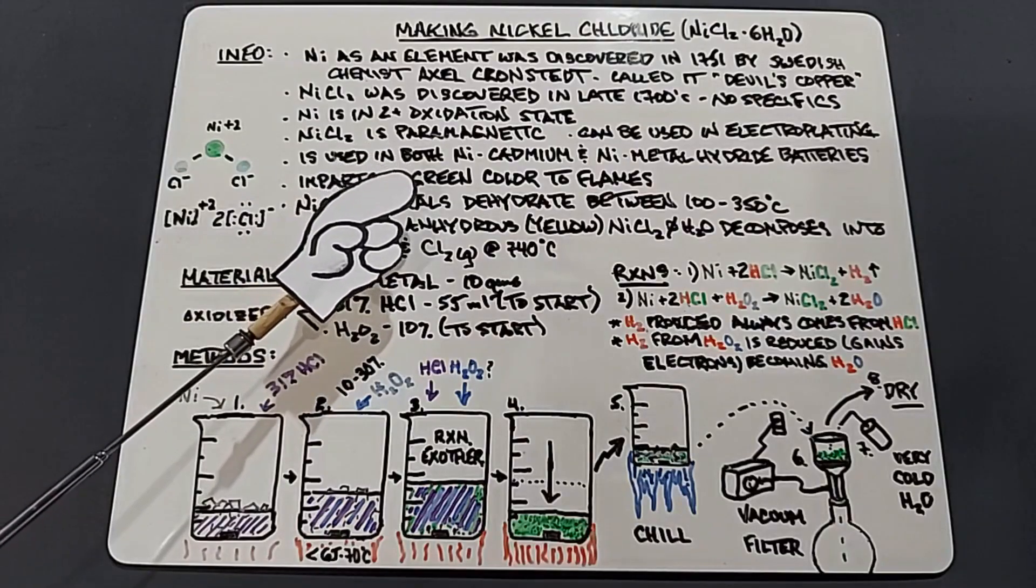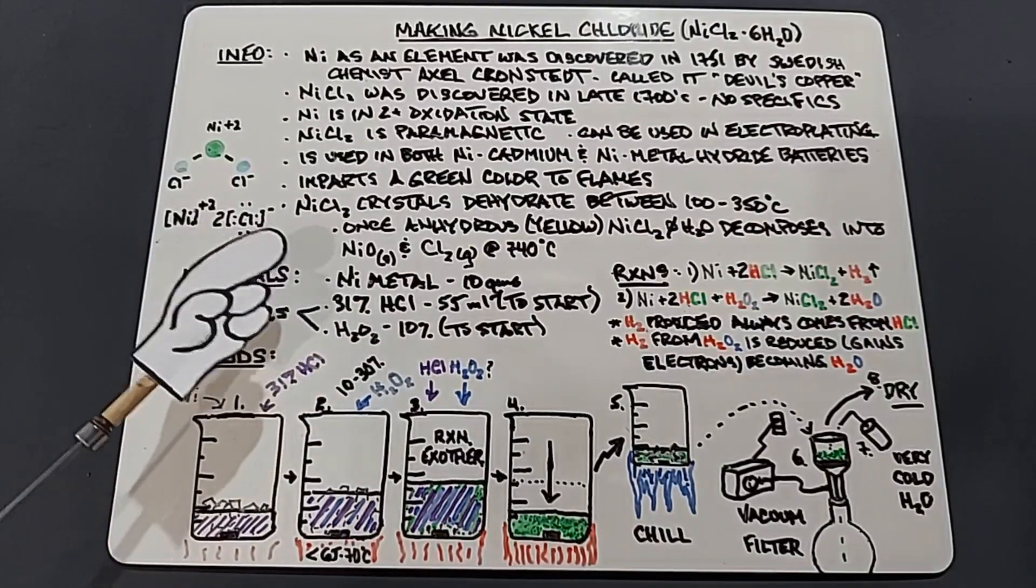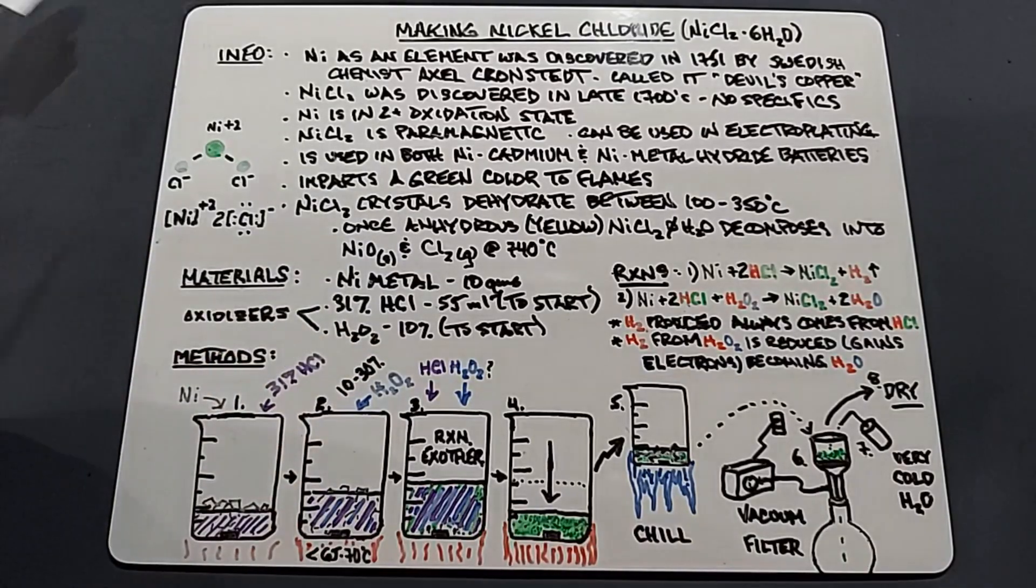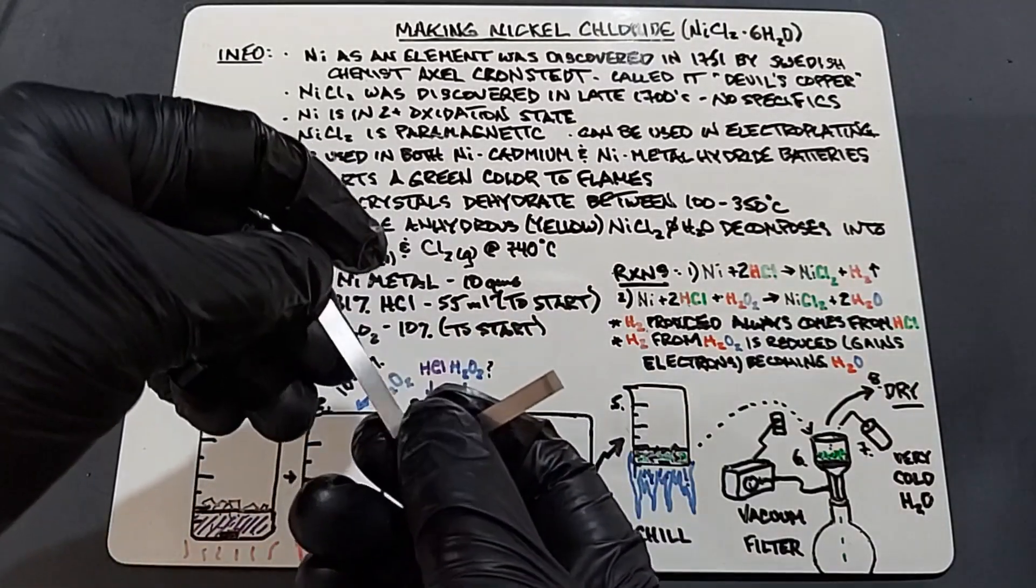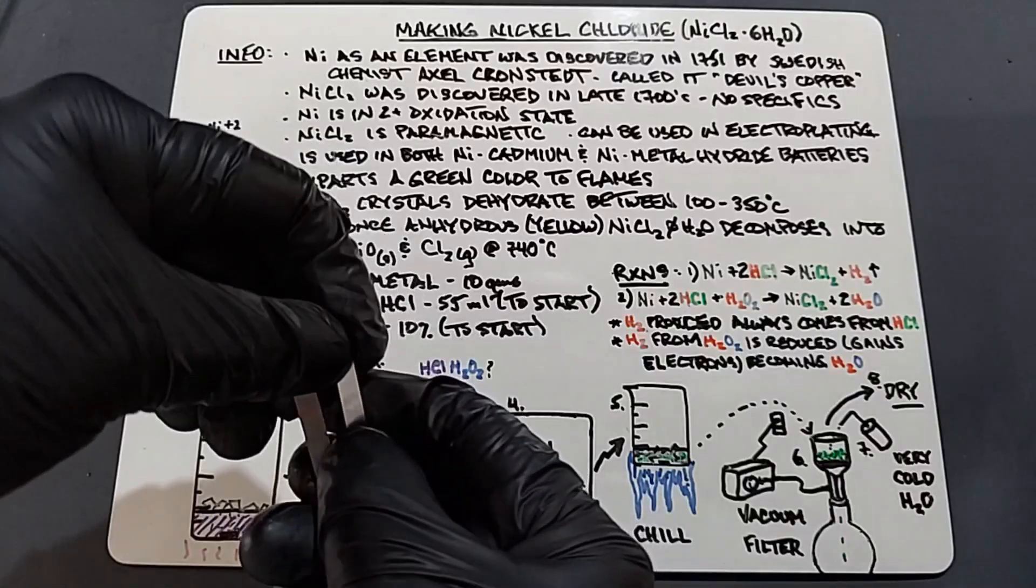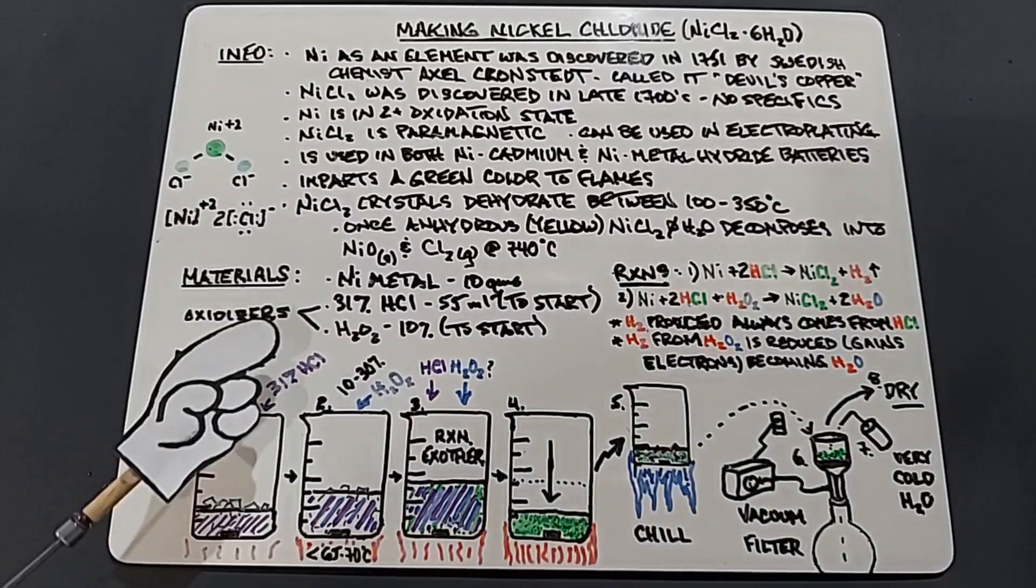Moving on to our materials, we need nickel metal—10 grams. I'm going to show you the kind of nickel I'm going to use. This time before, I tried to cut up rods and it was painfully slow to break up, but this time I have these nickel strips. So I'll weigh out 10 grams of these. And it turns out that, of course, pure nickel is magnetic.